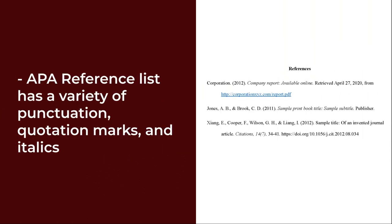In an APA reference list, the formatting will include a variety of punctuation, quotation marks, and italics. There are specific rules about what does and doesn't get italicized or enclosed in quotations, as well as where all the punctuation goes. This all depends on the type of source you are citing.